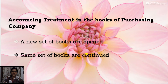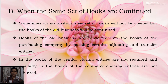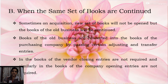When the same set of books are continued, a new set of books will not be opened; the books of the old business will be continued. The purchasing company will decide not to open a new set of books but will continue the books of the old business — either the sole trader business or the partnership firm. The books of the old business are converted into the books of the purchasing company by passing certain adjusting and transfer entries.